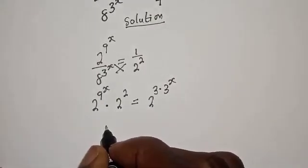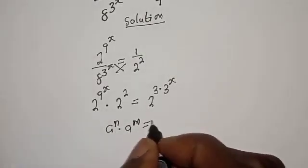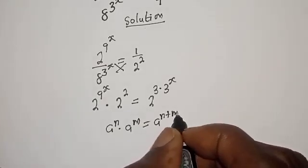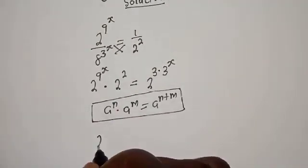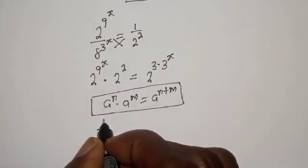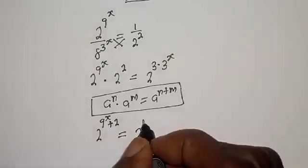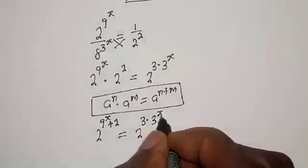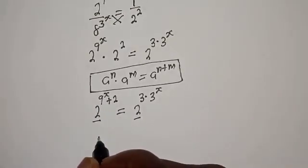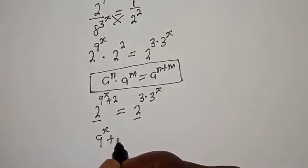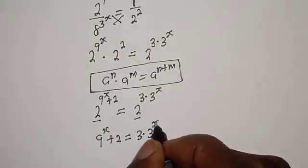Take note that if you have a raised to power n multiplied by a raised to power m, this is equal to a raised to power n plus m. So here we have 2 raised to power 9 raised to power s plus 2, is equal to 2 raised to power 3 multiplied by 3 raised to power s. Since we have the same base 2, we work with the exponents: 9 raised to power s plus 2 is equal to 3 multiplied by 3 raised to power s.